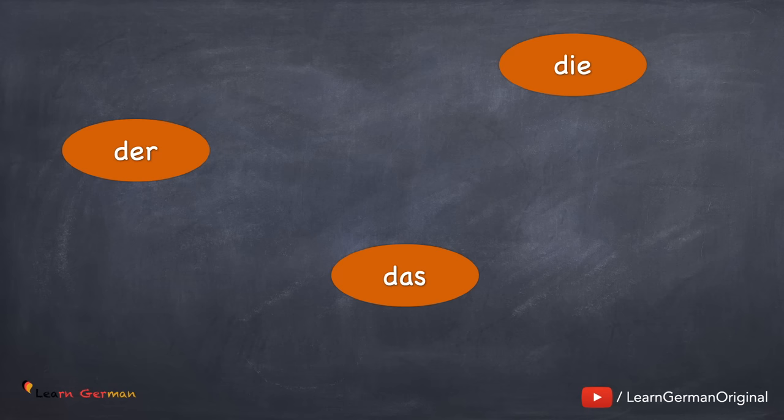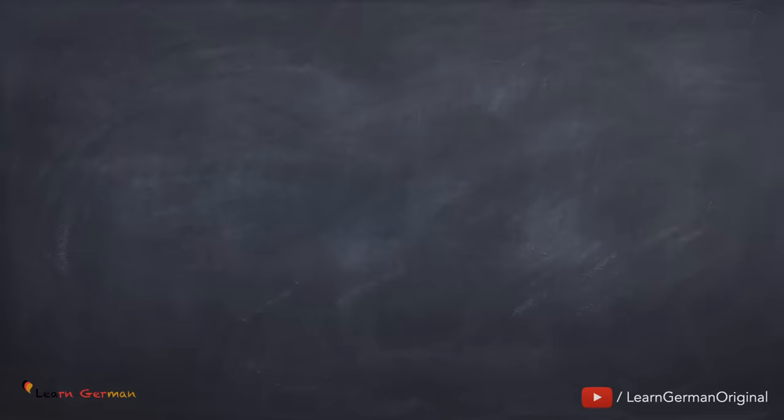Der. Die. Das. Do you know what these are? There are three definite articles in German that are used with the nominative case. Let's learn them.